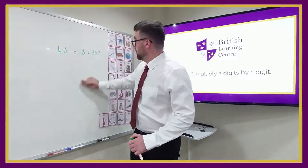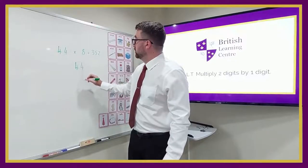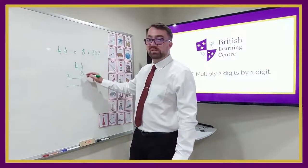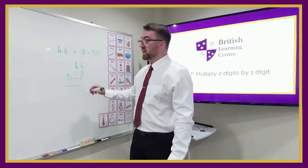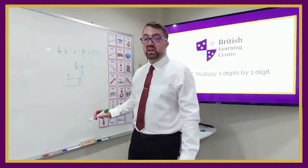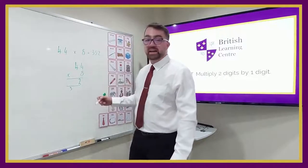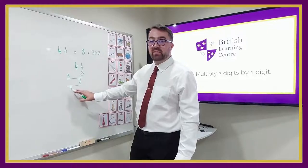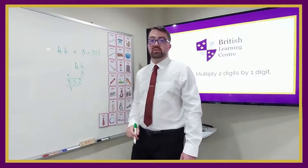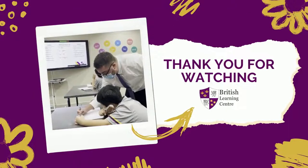I'm going to do 44 multiplied by 8, lining up my ones and my tens. First, 4 times 8 — we're going to have some carrying here. 4 times 8 is 32, so I write the 2 and carry the 3. Then 4 times 8 again is 32, and this time I don't forget to add the 3.